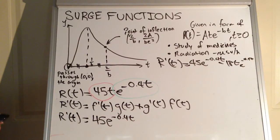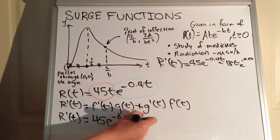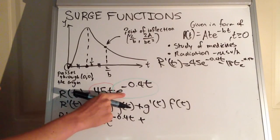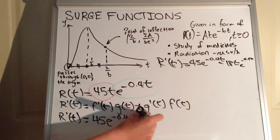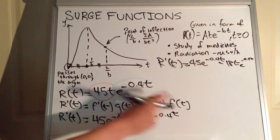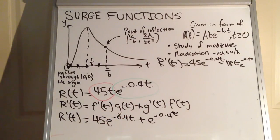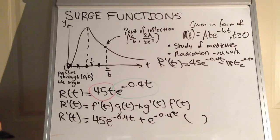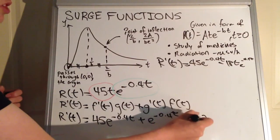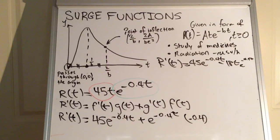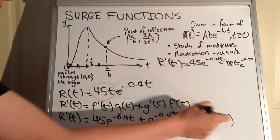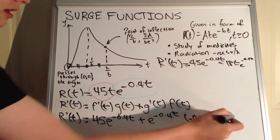Then we take the derivative of the second term. We notice it's e to the power of f(x), so we rewrite it. It's e to the power of something — we rewrite it, then take the derivative of the exponent. The exponent is negative 0.4t — a coefficient and a pronumeral — so the derivative is just the coefficient, negative 0.4. That's multiplied by the original f(t), which is 45t.